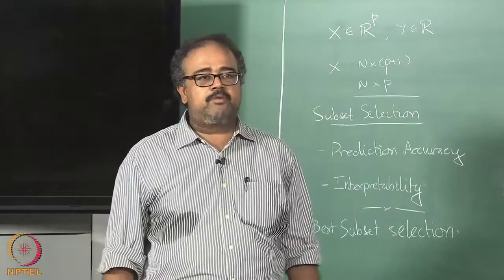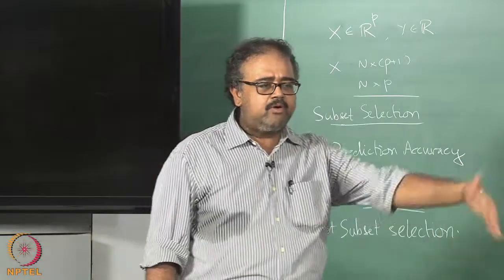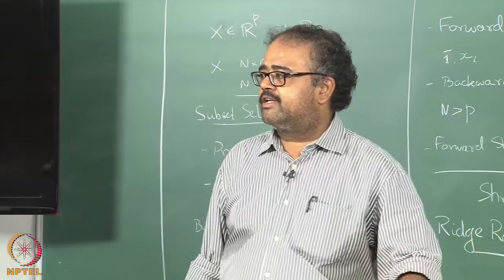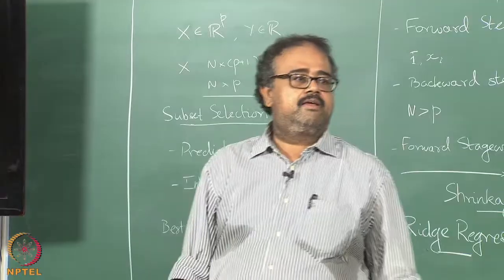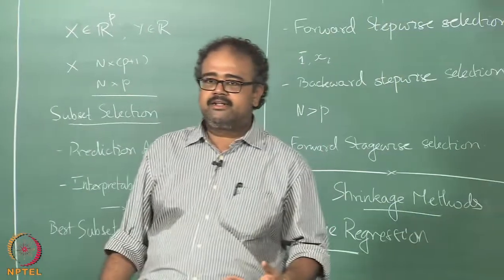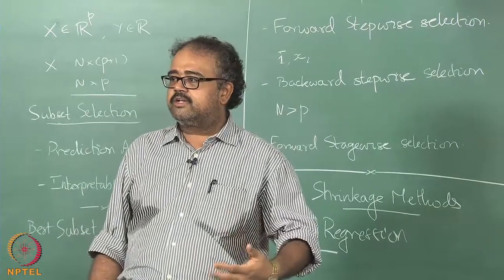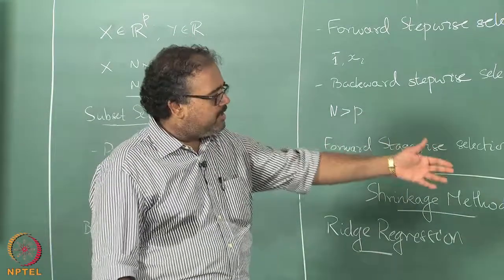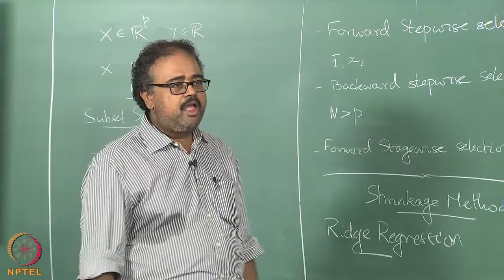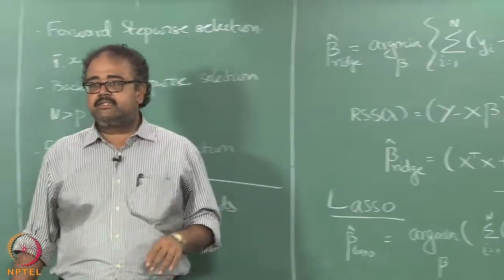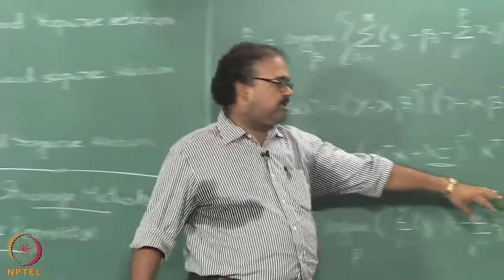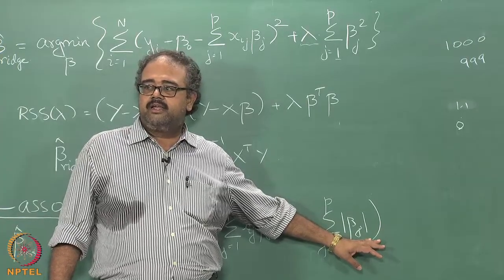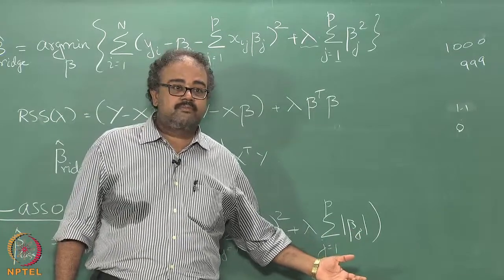Ridge would happily leave a coefficient at 1.1, or even more dramatically at 0.3, 0.2, 0.8 — it will leave it at small values but will not drive it all the way to 0. Lasso, given an opportunity, will drive coefficients to 0 while still trying to minimize the error — it is more likely to drive coefficients to 0. Sometimes Lasso is also called sparse regression because the L1 norm constraint is also called a sparsity constraint, since it makes the beta vector have more zeros.